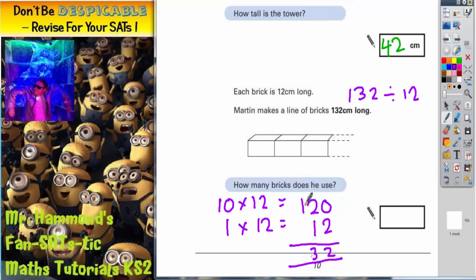So if you add those two together you're going to get your 132. 2 plus 1 is 3, 1 plus nothing is 1. So 10 lots of 12 plus 1 lot of 12 gives us 132. So all together 10 lots plus 1 lot means we've got 11 lots of 12. So you would be able to make 11 bricks side by side to make this line of bricks 132cm long. So the answer is 11.